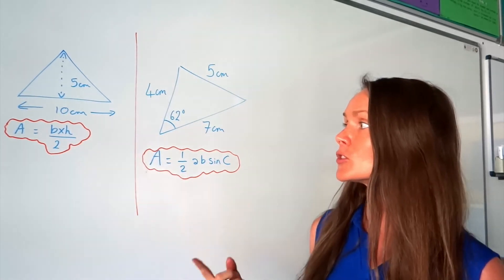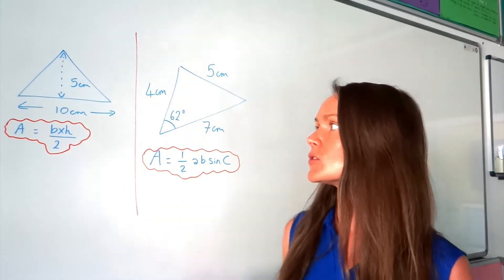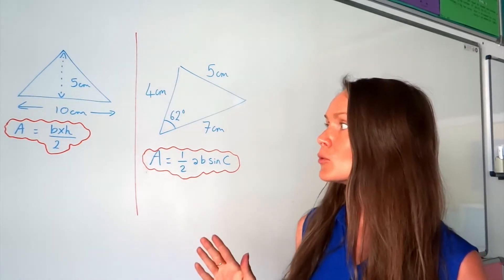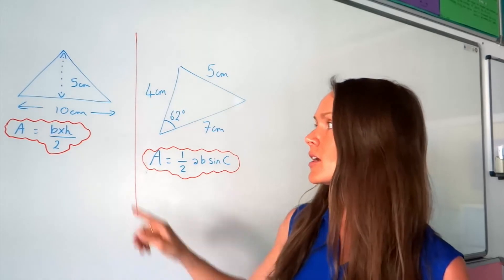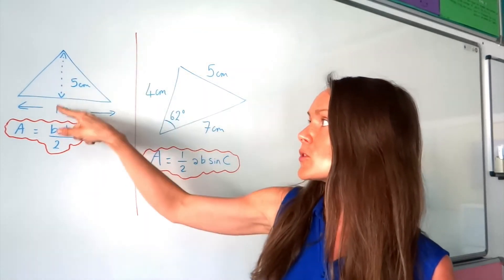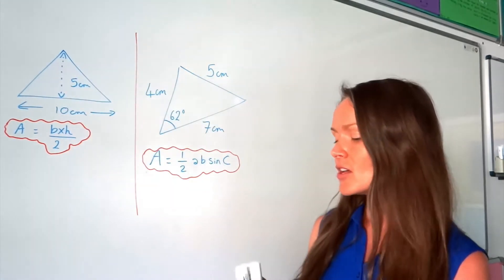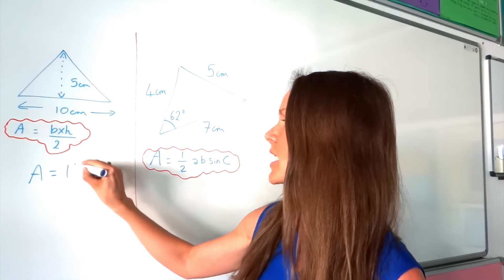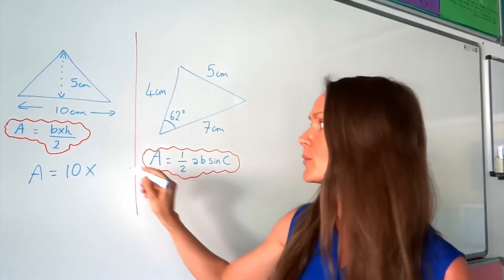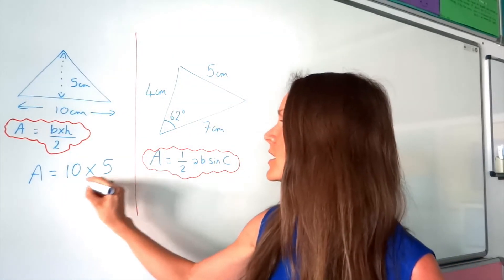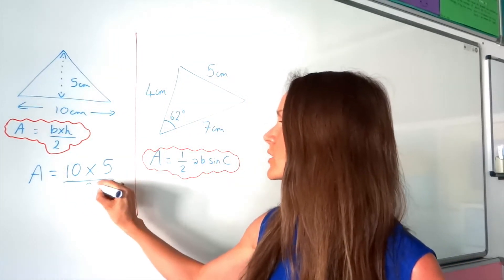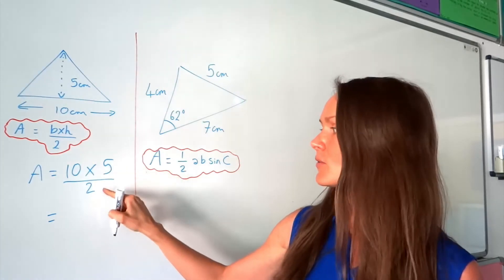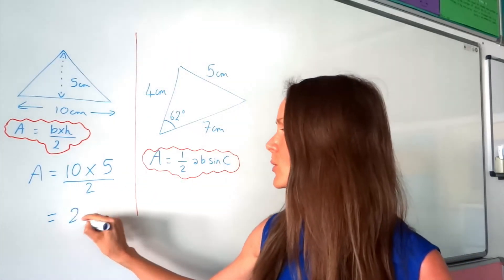In order to use this formula, you must know the length of the base and also the perpendicular height, which is what's been given here. So in this one, you would just do the base, which is 10, multiplied by the height, which is 5, divided by 2. So 10 times 5 is 50, divided by 2 is 25.